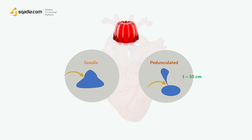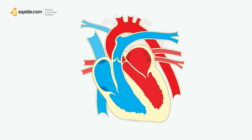Histologically, they consist of gelatinous material and the myxoma cells are immersed in glycosaminoglycans. They most frequently arise in the left atrium, attached to the interatrial septum in the region of the fossa ovalis. They are usually attached by a pedicle.